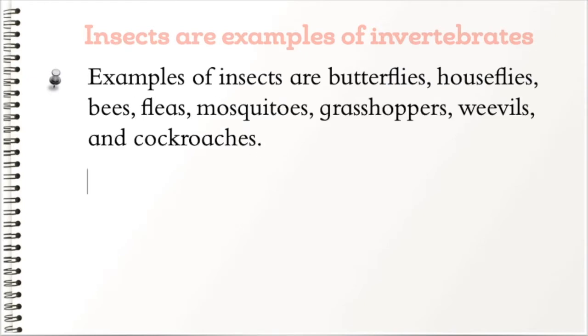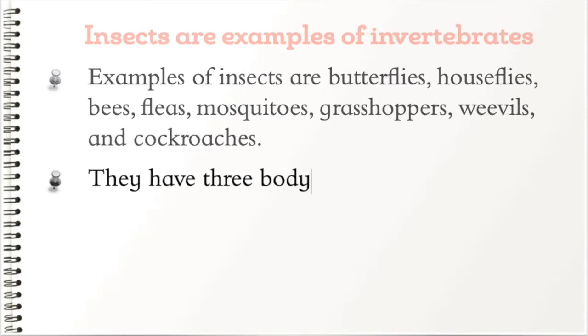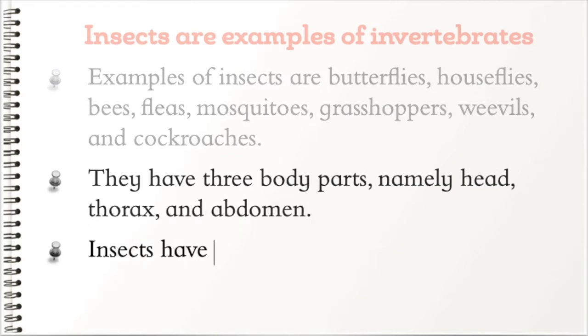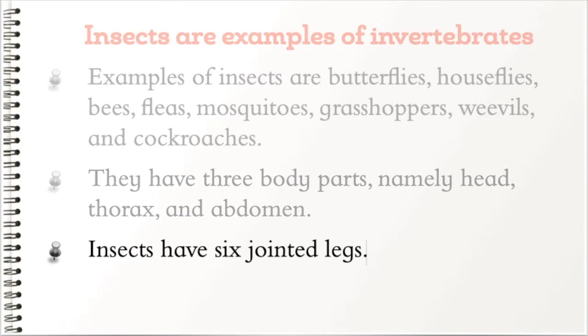Insects have three body parts: head, thorax, and abdomen. Insects have six jointed legs. Insects use wings to fly, though not all insects fly.